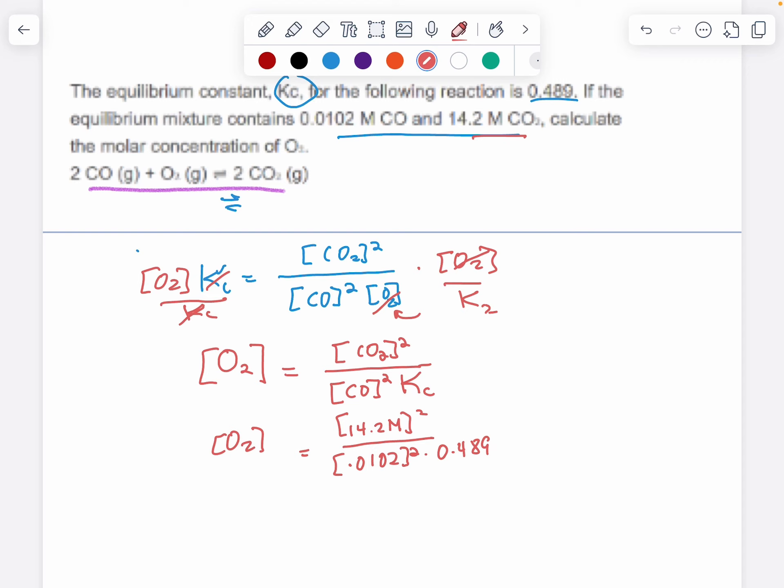And I know at this point in the semester people sometimes find that they need new calculator skills they don't quite have yet, so I'm just going to type into my calculator and say what I'm doing button by button. So I'm typing in 14.2 and then on my calculator I have an x squared button. I'm just going to do the x squared. Then I'm going to do divided by 0.0102 and I'm going to press the x squared button again. And then because that 0.489 is in the denominator, I'm going to type in a division sign again and 0.489.